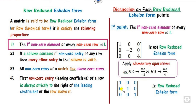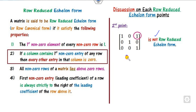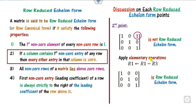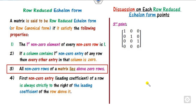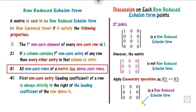Similarly, is this a row reduced form? No, because a value above the pivot is non-zero. To make it row reduced, use the row operation R1 minus R3 to make that value 0. For a matrix where a zero row is not at the bottom, simply interchange row 2 and row 3, and it becomes row reduced echelon form.